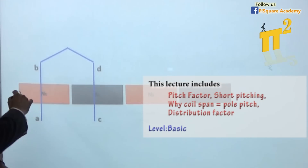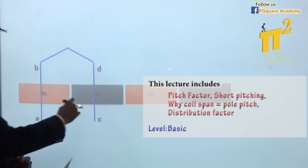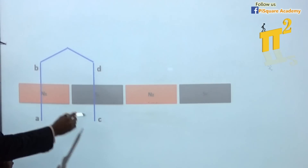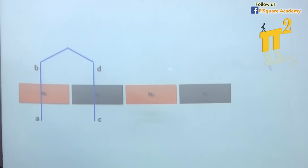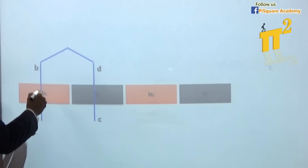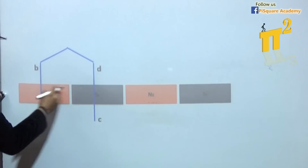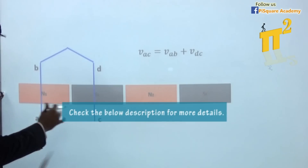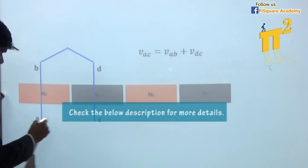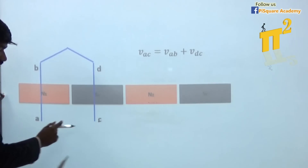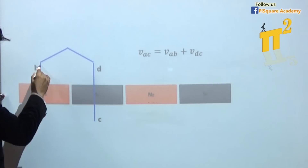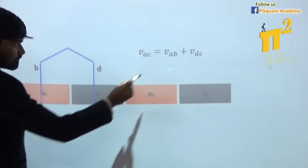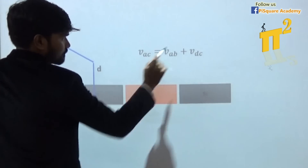I am taking a simple winding with one turn — we have one conductor here and another conductor there. The distance is pole pitch, so coil span is equal to pole pitch. According to simple KVL, what we know is VAC, that is the coil voltage: VAC is equal to VAB plus VDC.